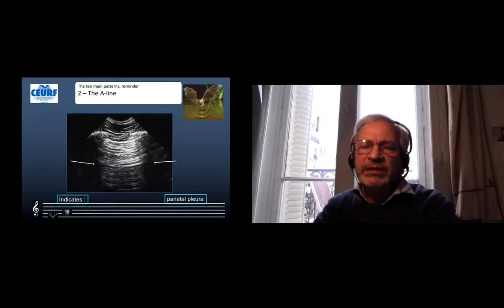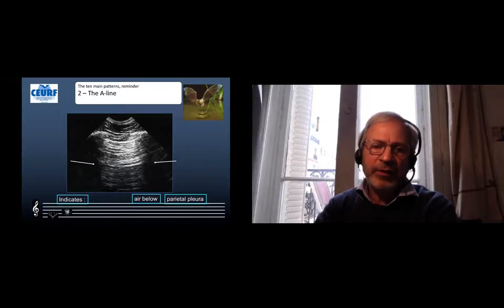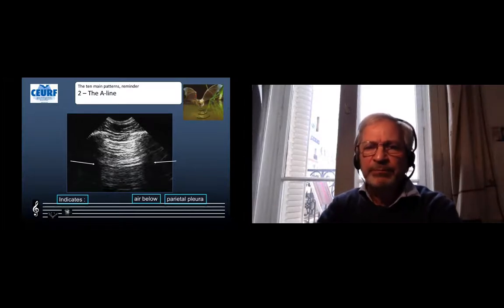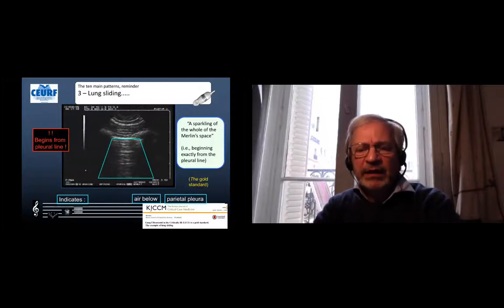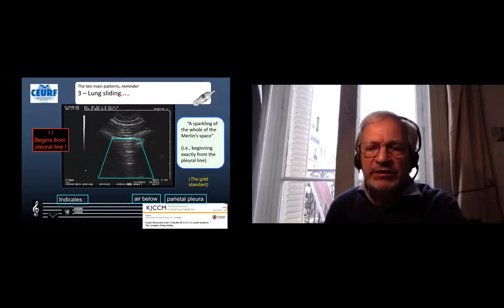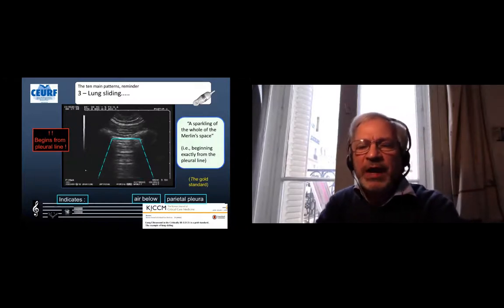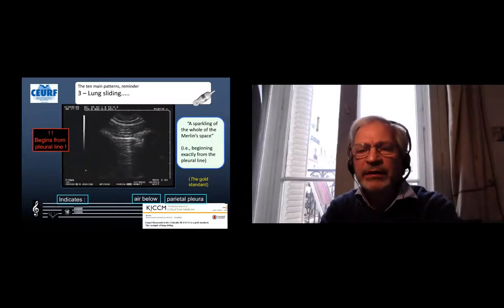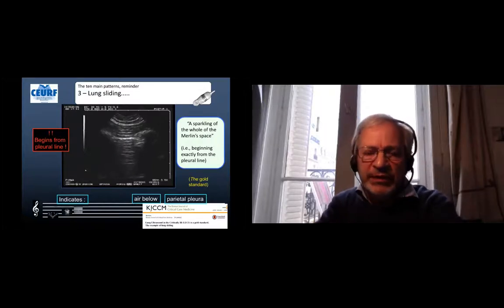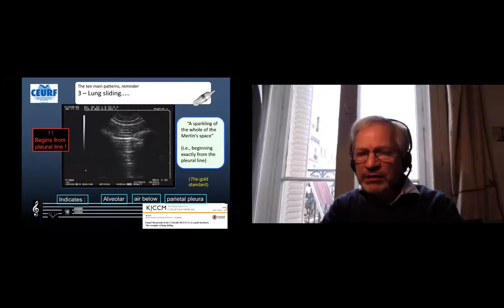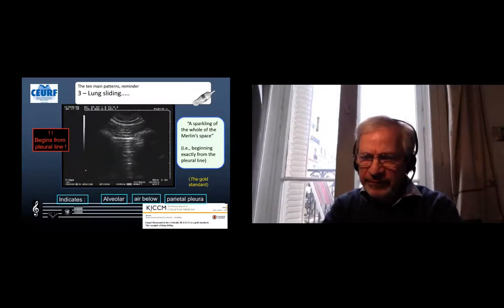The A-line is a repetition of the pleural line which indicates that below the pleural line we have aeric structures, alive or dead, we still don't know on this image. The lung sliding is the third sign, very basic. In this rectangle that we call the Merlin space, we can see a sparkling that begins exactly from the pleural line. You can see only the pleural line or the whole of the Merlin space to see that the air which is below the parietal pleura is alveolar air, which means there is no pneumothorax on just this image.